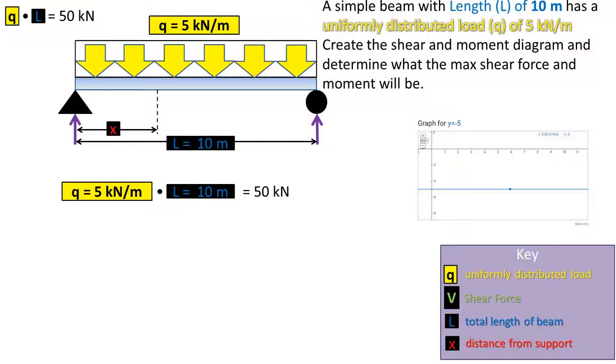The distributed load can be graphed by setting the value of y equal to negative 5. We notice that the force acting on the hinge support on the left and the rolling support on the right must each account for half of the total force on the beam. The two forces up must combine to cancel out the uniform load pushing down in order to keep this beam from not moving. Because the load is uniformly distributed across the entire beam, the load must evenly be distributed between these two supports.